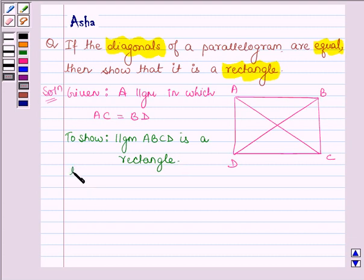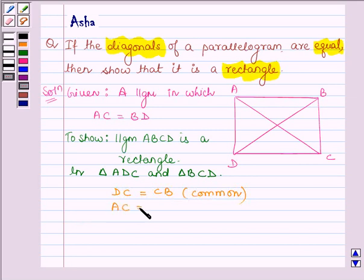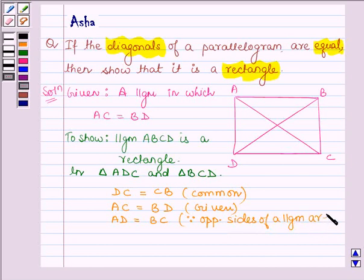Now in triangle ADC and triangle BCD, we have DC equals CB, which is common to both triangles. Also, AC equals BD since the diagonals of the parallelogram are given equal. And AD equals BC since opposite sides of a parallelogram are equal.